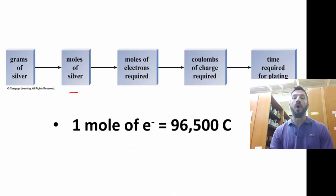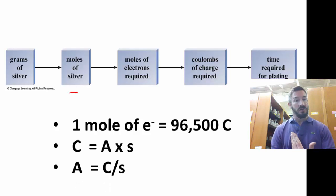A couple of things to remember. One mole of electrons is 96,500 coulombs. Write that down. Next one. Coulomb is equal to amps times seconds. Or we could say an amp is equal to coulombs divided by seconds. Or we could say seconds is equal to coulombs divided by amps. So we're going to use all those.